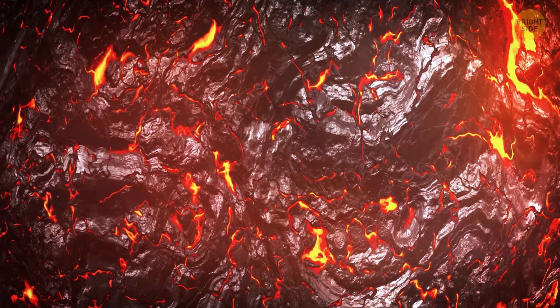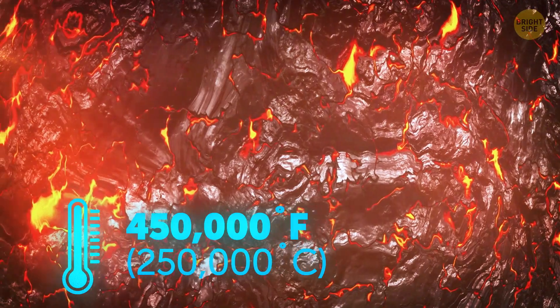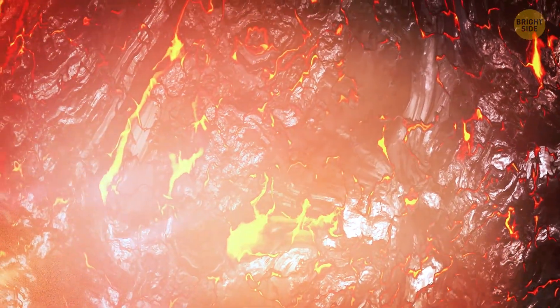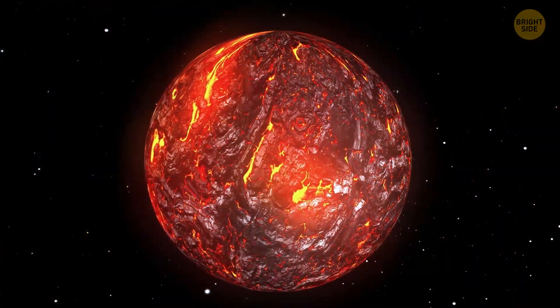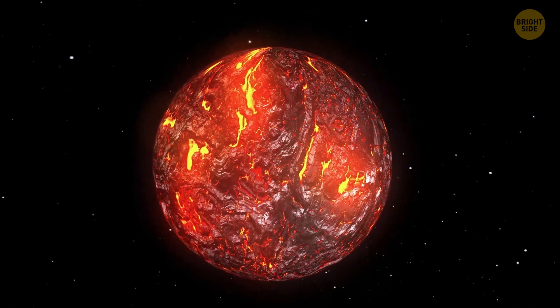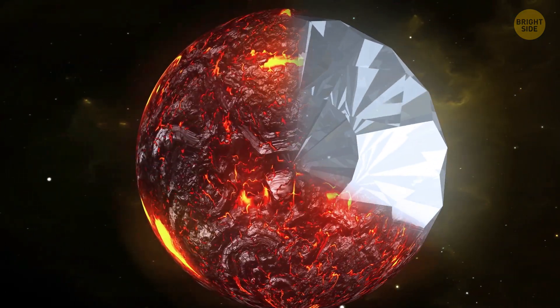The planet is scorching hot, the temperatures on the day side reaching almost 5000 degrees Fahrenheit. But the coolest thing about 55 Cancri e is that, according to some specialists, at least a third of the planet's mass could be diamond. That's the equivalent of around three masses of our home planet.